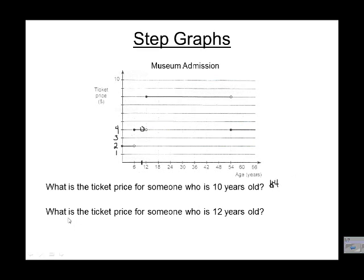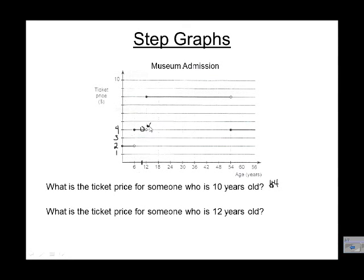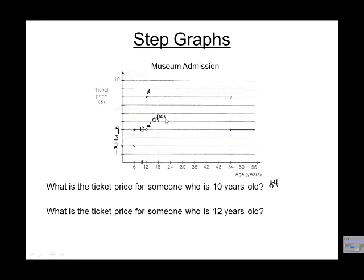Let's take a look at another one. What's the ticket price for someone who's 12 years? Well, go to 12. And now as we go up, we notice there's two values at that point. We've got a value here where it shows 12, and a value up here that's 12. Now, we'll notice that these two dots are different. This dot here that's not filled in is called an open dot.